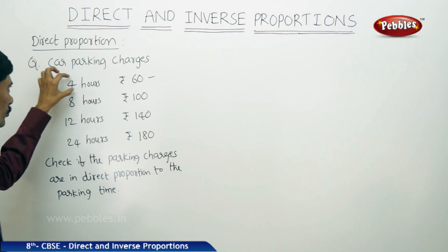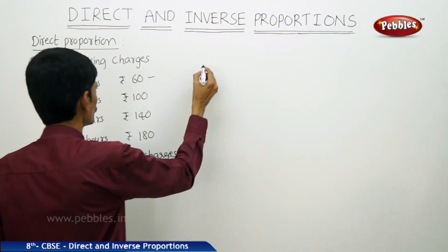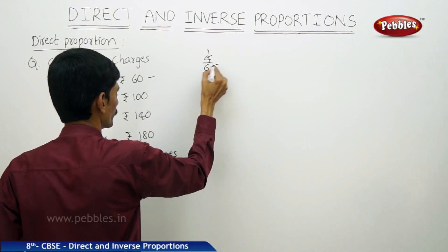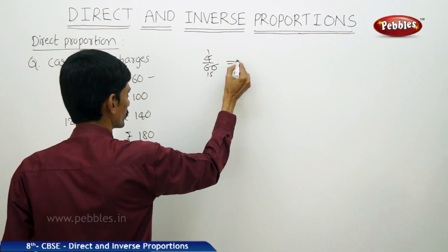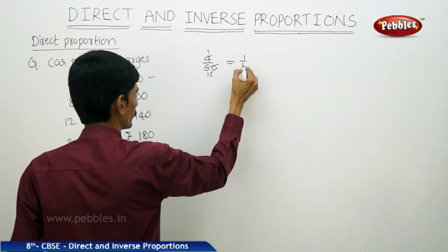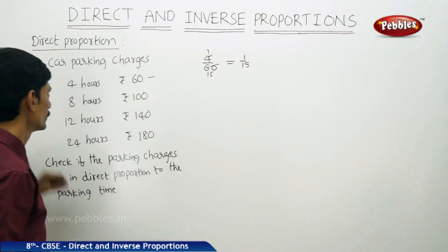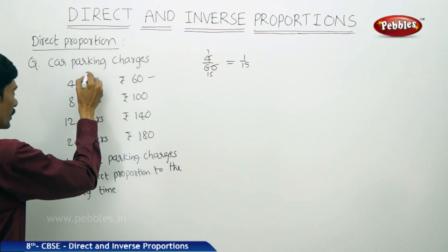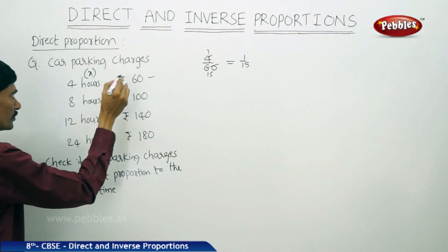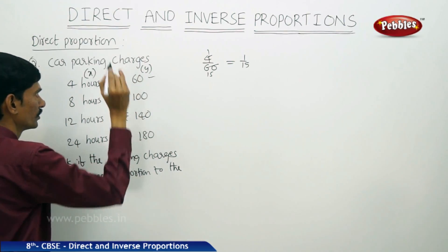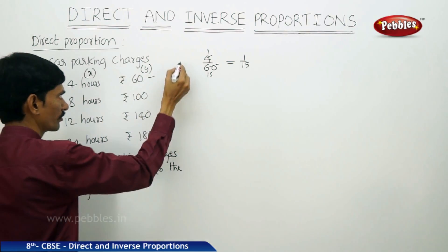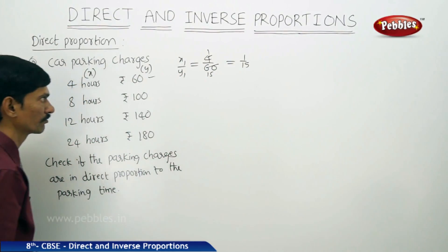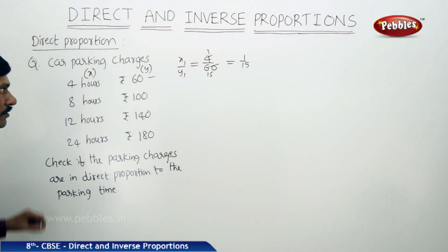In the first case, the ratio between two quantities: 4 by 60 equals 1 by 15. Taking this as x and this as y, x1 by y1 equals 4 by 60, which equals 1 by 15.